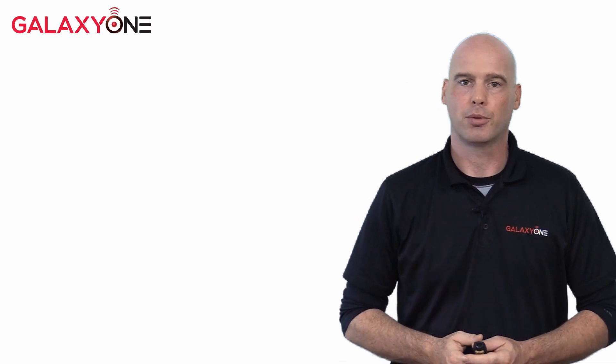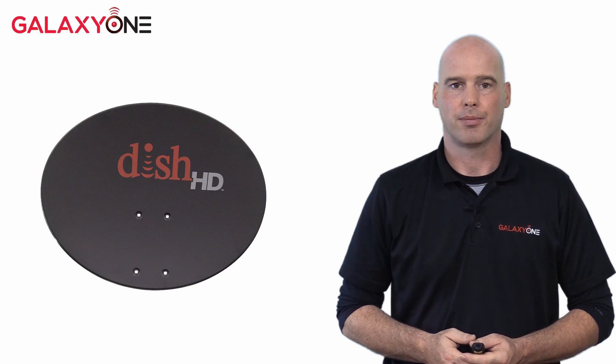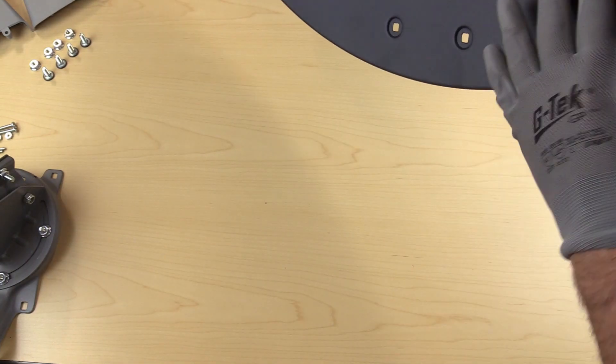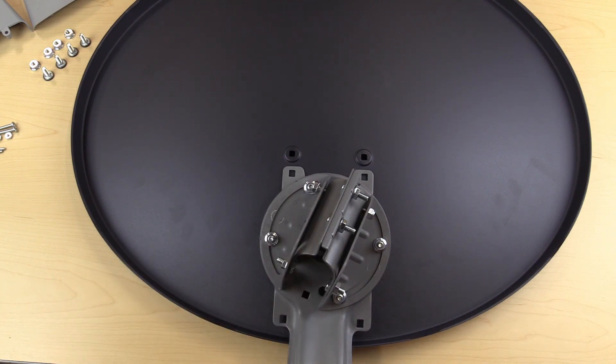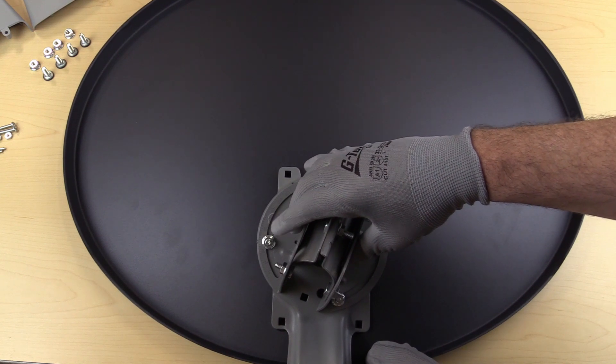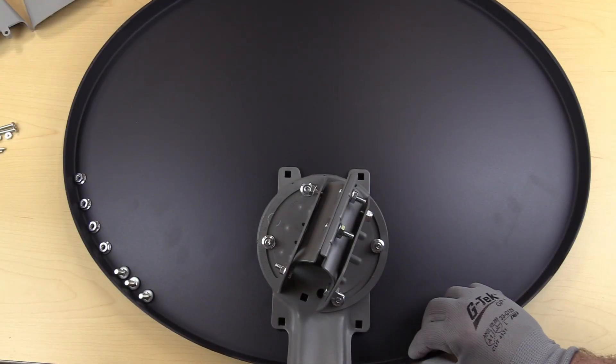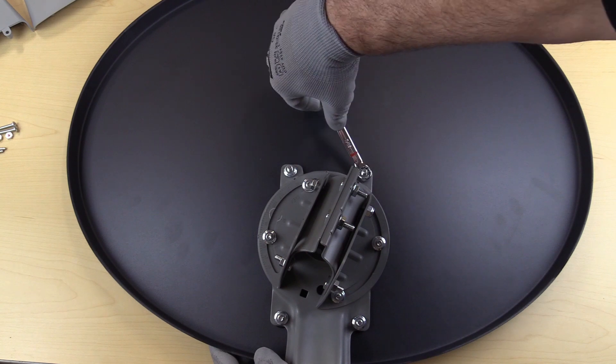We can now attach the skew assembly to the reflector. Make sure to be gentle with the reflector as it can easily be bent. Set the reflector face down on a flat surface. Place the skew assembly onto the reflector. Align the four bolt holes. From the hardware kit, insert the four finished carriage bolts up into the reflector and add 7/16ths nuts. Using your 7/16ths wrench, snug the four finished carriage bolt nuts.